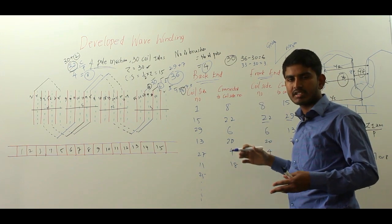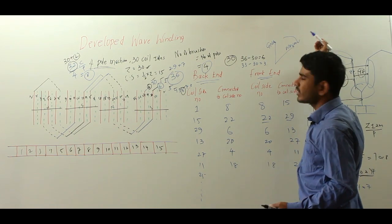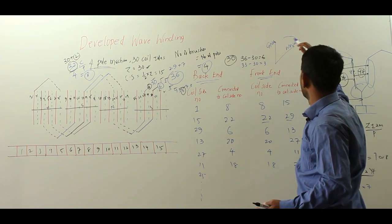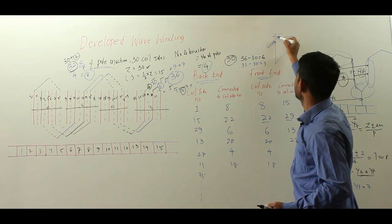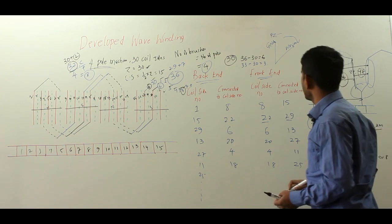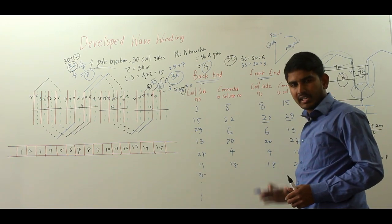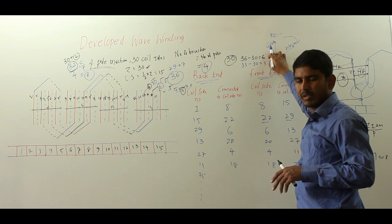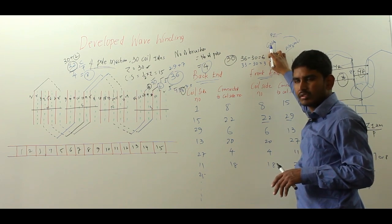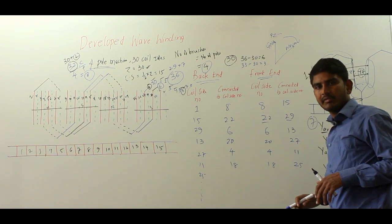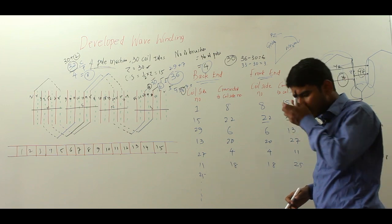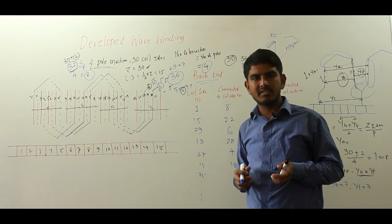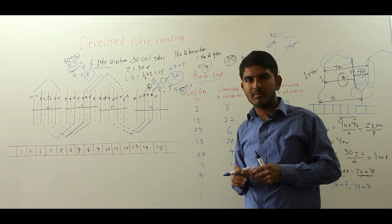In armature reaction, the geometrical neutral axis (GNA) is fixed, but the magnetic neutral axis (MNA) is shifted. For a generator, the MNA shifts in the direction of rotation; for a motor, it shifts opposite to the direction of rotation. When only the field is excited at no-load, the MNA coincides with the GNA and there is no armature reaction effect. When both armature and field are excited, the armature flux distorts the main field flux, reducing the generated EMF.